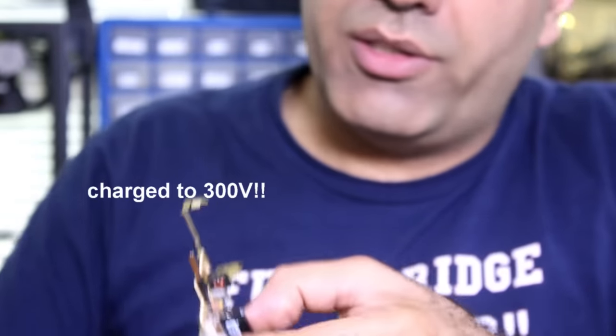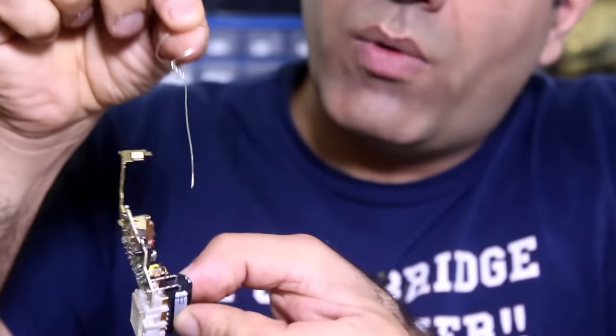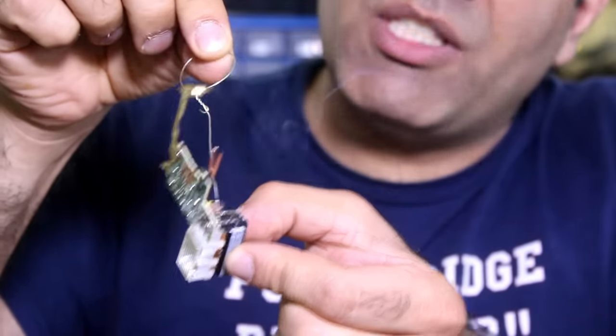For example, my triple A battery can output around one amp continuously. But if instead I charge my super capacitor, then I can discharge it in one shot and release hundreds of... Ow! Anyway, when you short the capacitor, you can release hundreds of amps in one shot, and that creates a huge electromagnetic pulse.